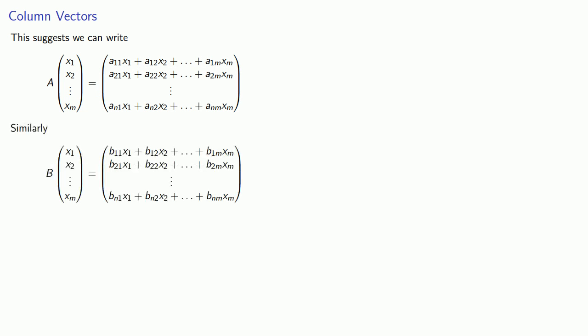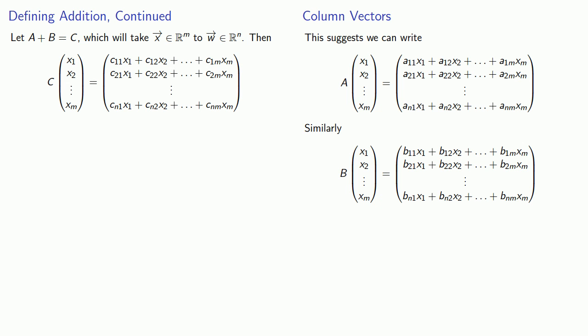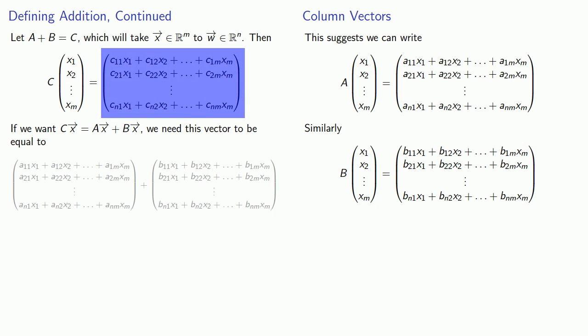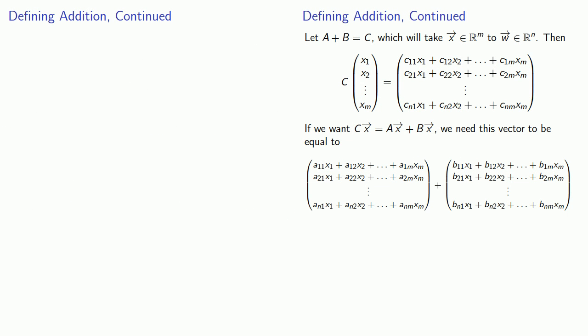And we can go one step farther. If I apply the matrix A to the column vector X1 through Xm, then I can write the result of that operation as A times our column vector gives us our column vector. And similarly, B acting on the same vector is going to give us another column vector. So our next step in trying to define addition is we'll let A plus B equal some matrix C, which will take vectors in R^m and send them to vectors in R^n. So we can write this as the matrix equation C applied to the column vector X1 through Xm has to give us the column vector as shown. Now we want CX to be equal to AX plus BX, so we need this output vector to be equal to our AX vector plus our BX vector.